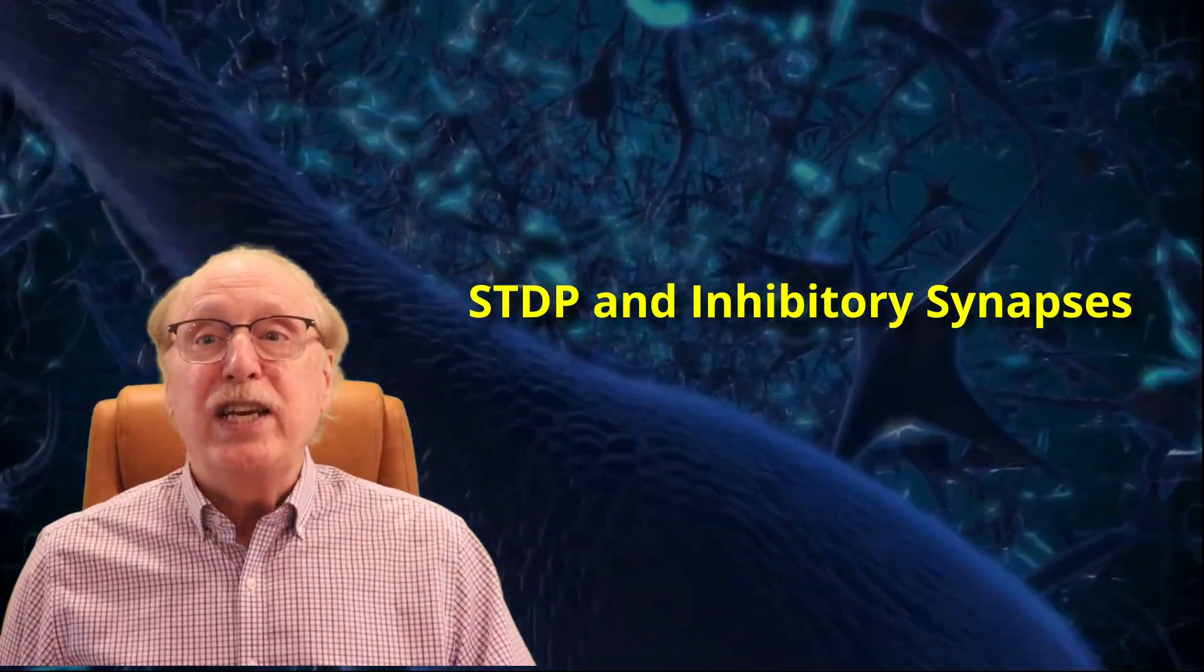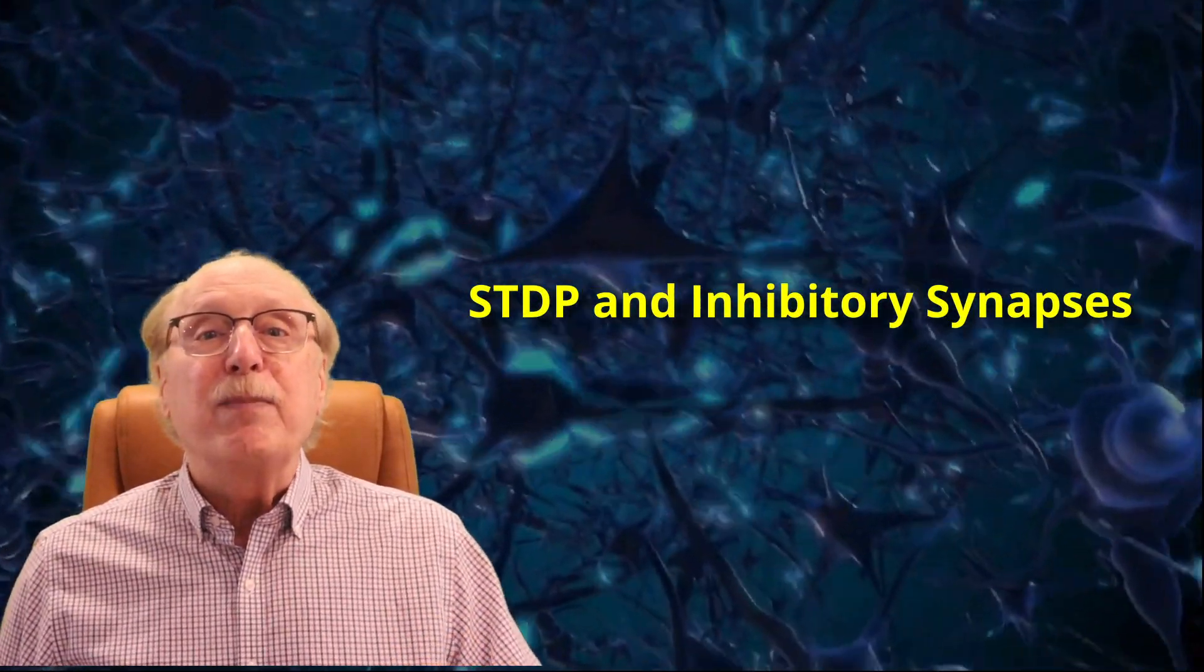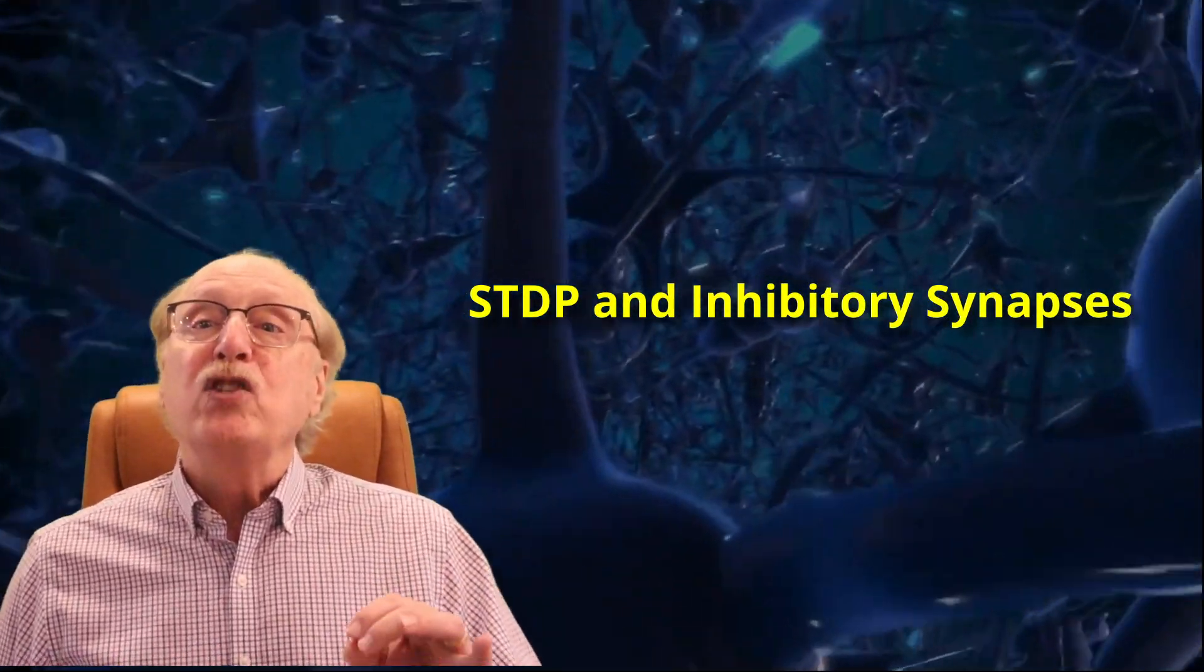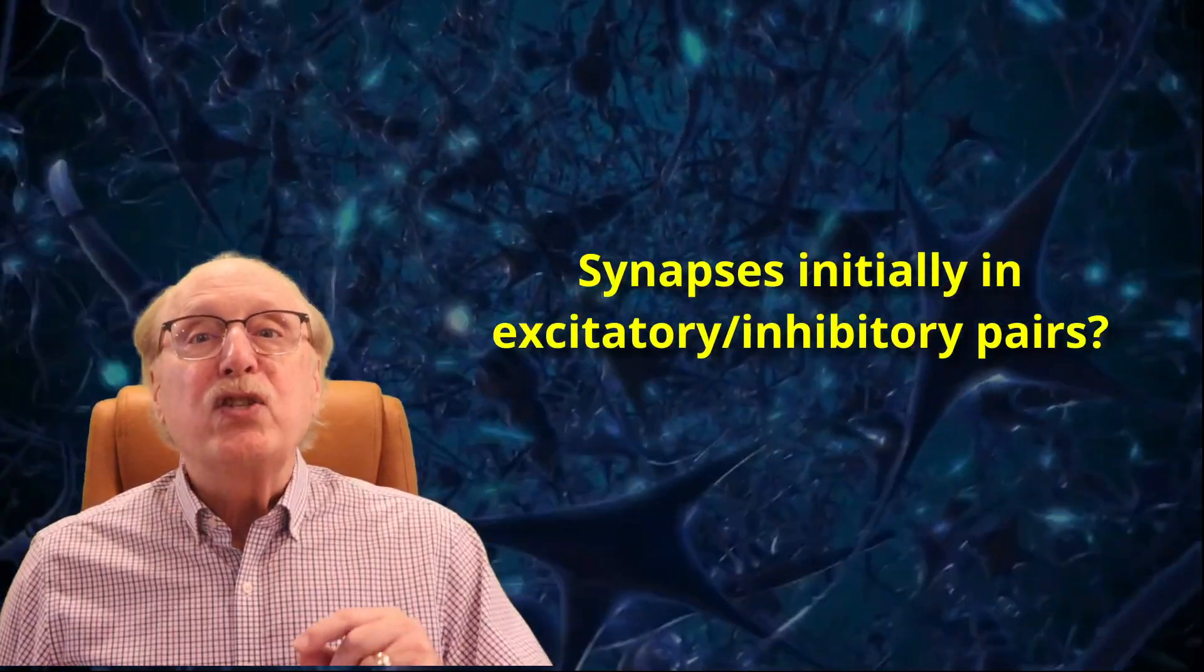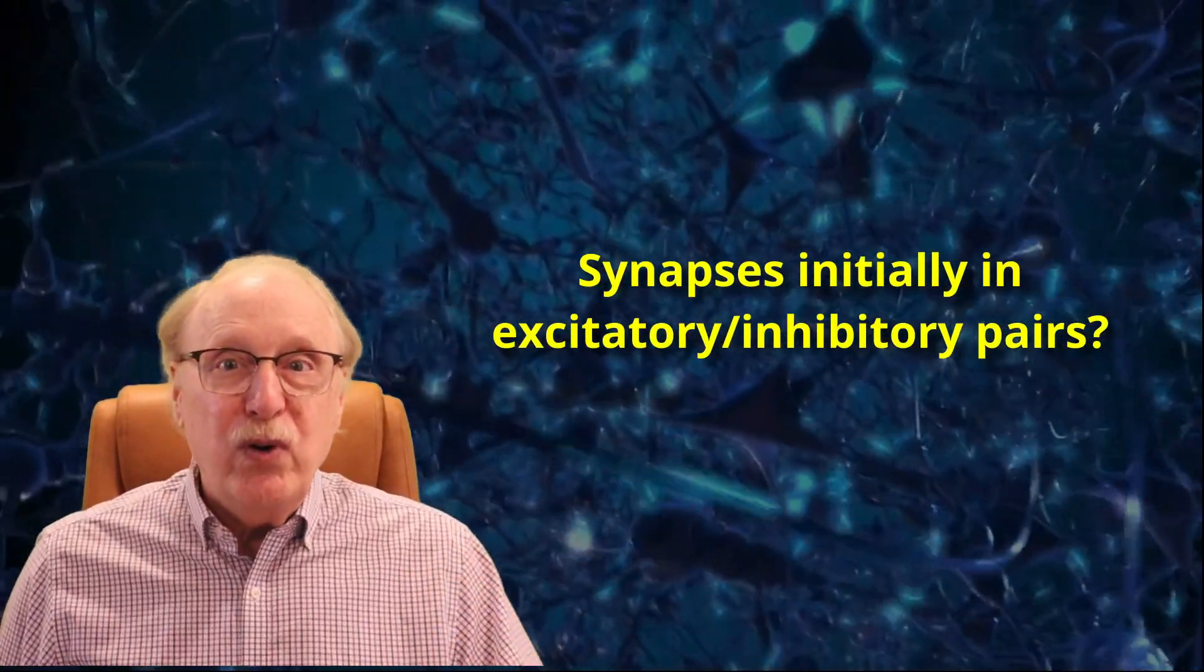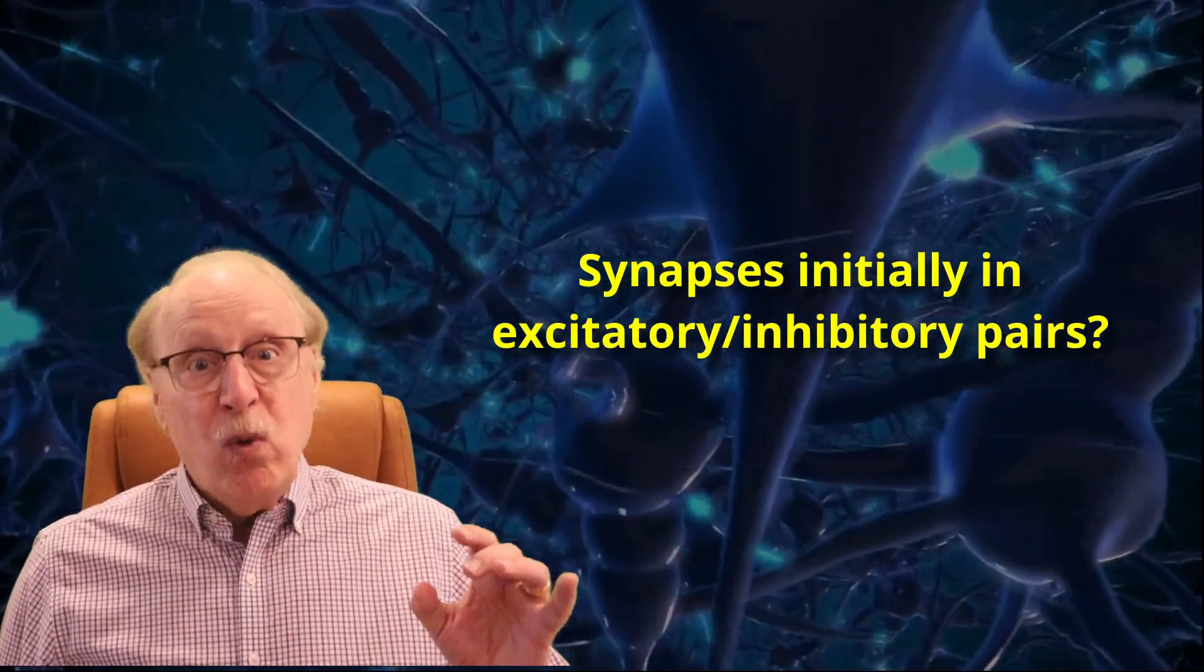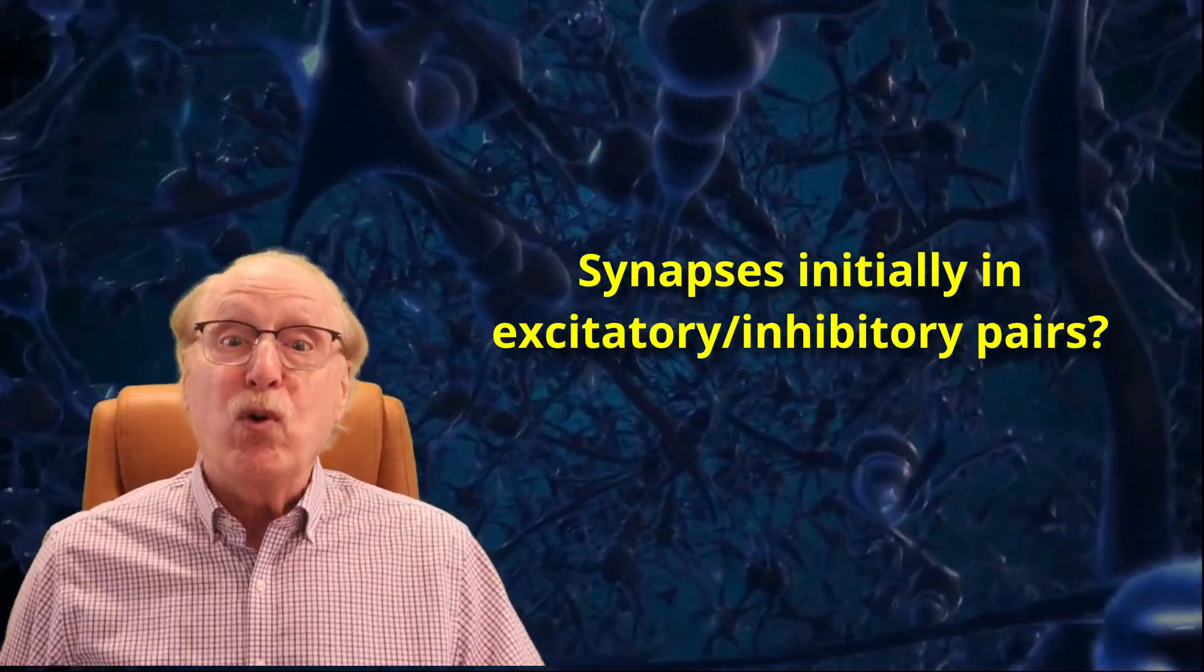STDP addresses inhibitory synapses separately. As I mentioned in the previous video, inhibitory synapses have a different chemistry, so there is no way for a biological synapse to adjust gracefully from a positive to a negative weight, the way our simulated ones can. In the instance I'm describing where you don't know in advance whether a synapse needs to be positive or negative, we must have both an excitatory and an inhibitory synapse more or less in parallel.